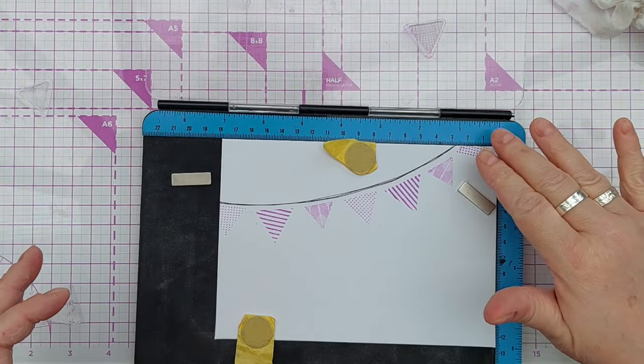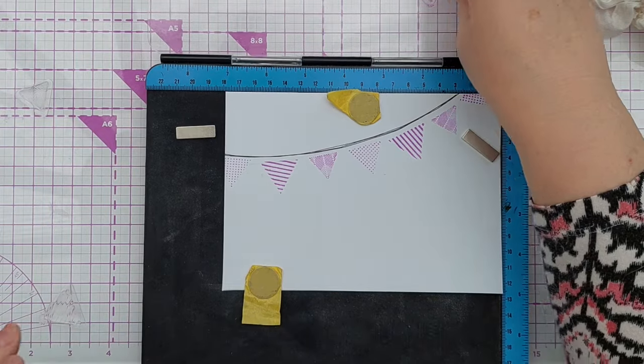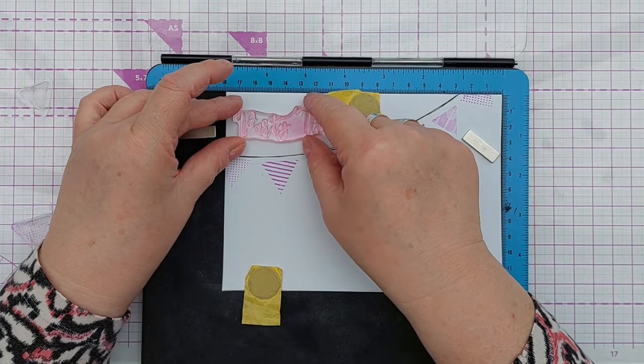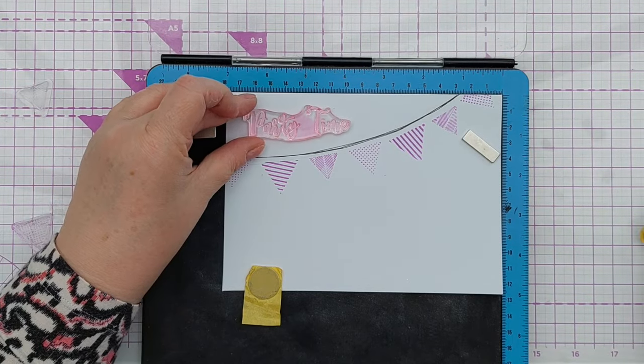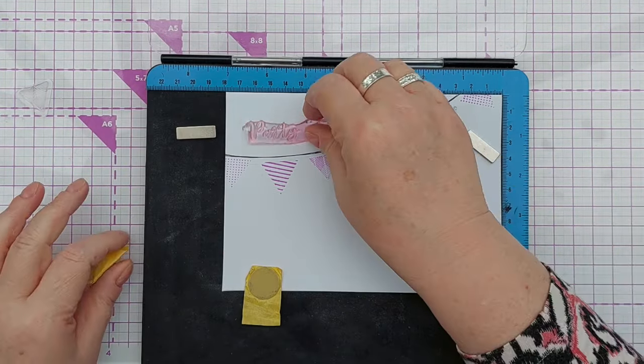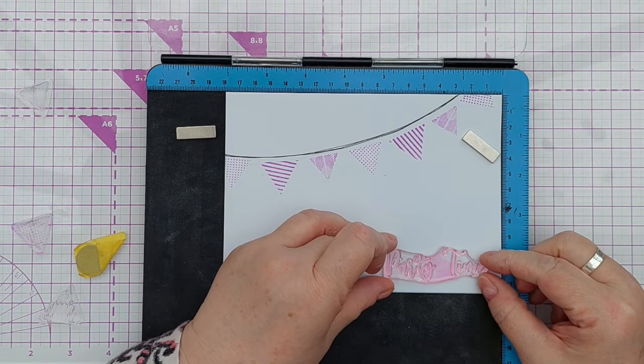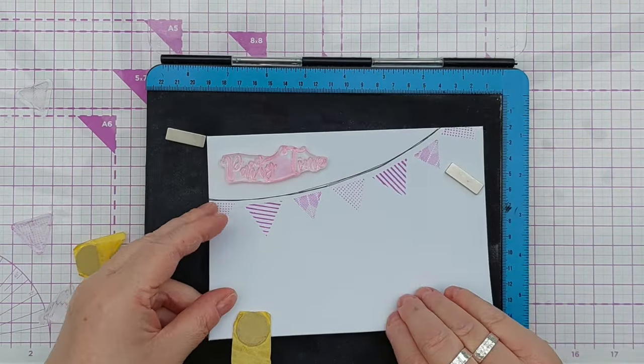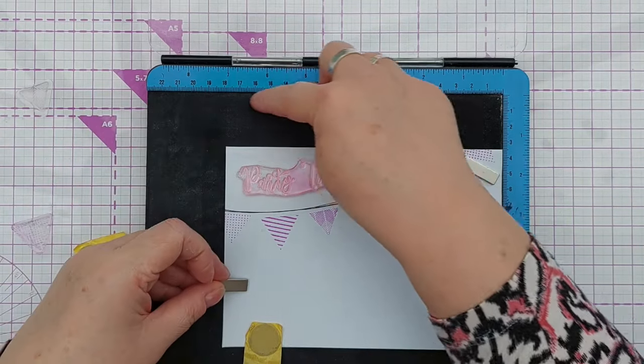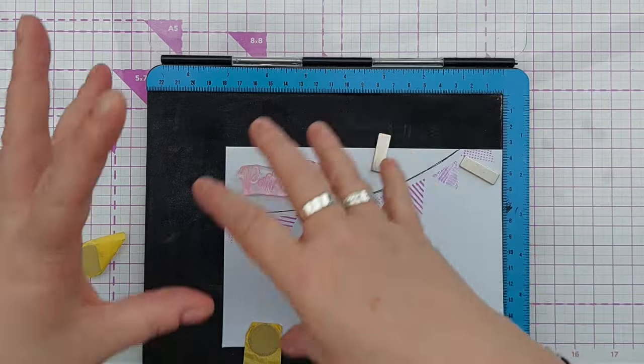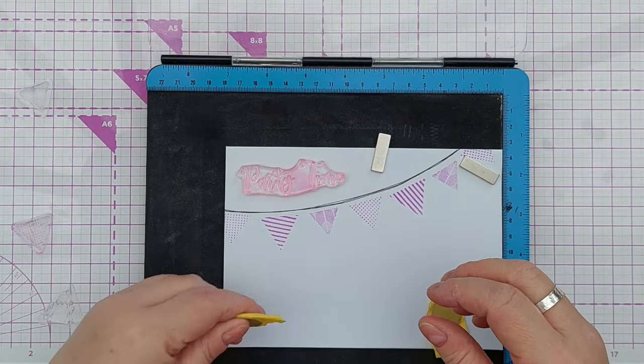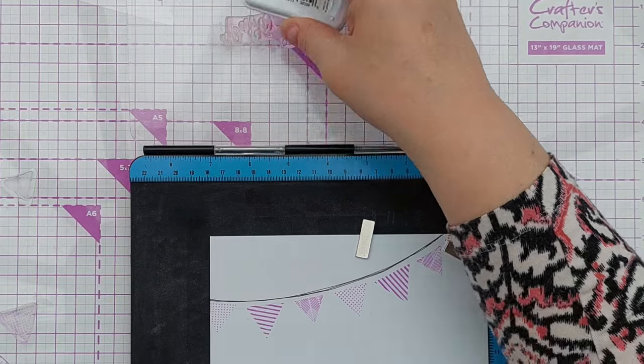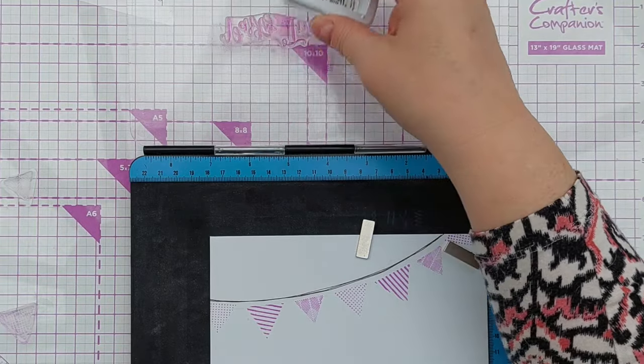I've got all my bunting stamped now. Before I put away my stamp positioner, I'm going to stamp my sentiments. This stamp here says 'party time' and this could go maybe up here in this part or down here to balance things out a bit. I think I'm going to pop it up here. I'll just go with the same color again, keeping it simple.